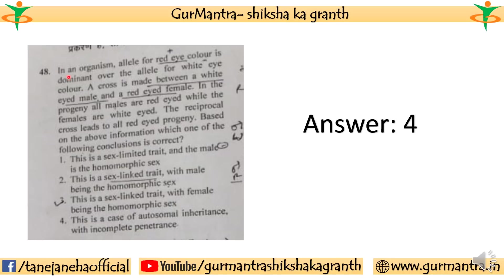Question 48: In an organism, the allele for red eye color is dominant over the allele for white eye color. A cross is made between a white-eyed male and a red-eyed female. In the progeny, all males are red-eyed while the females are white-eyed. The reciprocal cross leads to all red-eyed progeny. Based on this information, the fourth one is the correct answer — this is a case of autosomal inheritance with incomplete penetrance.